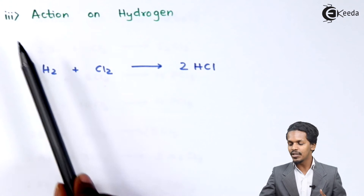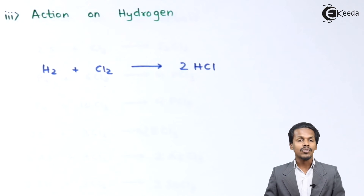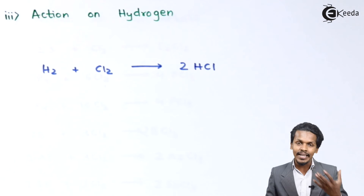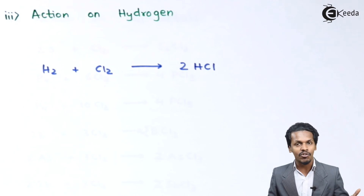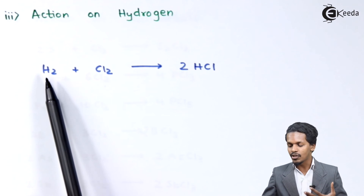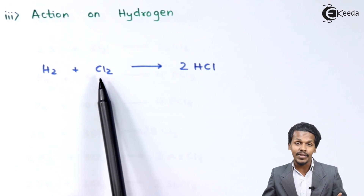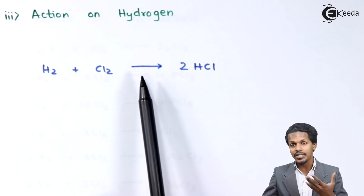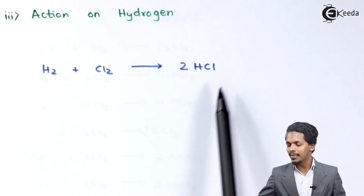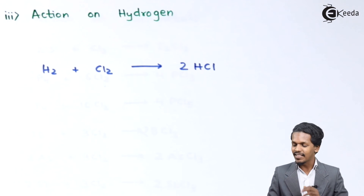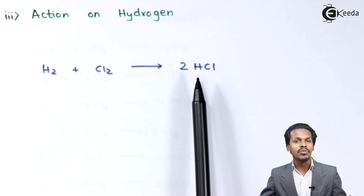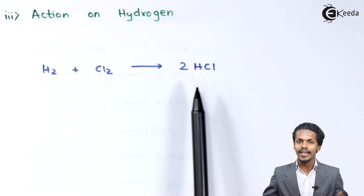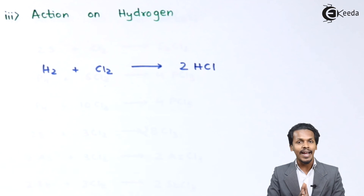The last part is the action of Cl₂ on hydrogen. Chlorine gas is very much reactive to hydrogen because it has a very high affinity towards the hydrogen molecule. Whenever H₂ reacts with Cl₂ in the presence of diffuse sunlight, it forms 2 moles of HCl — hydrochloric acid.